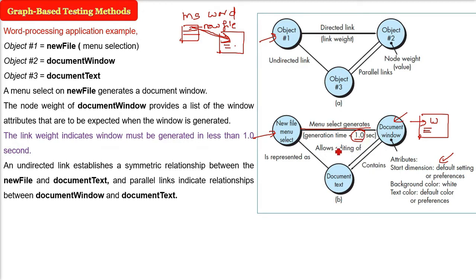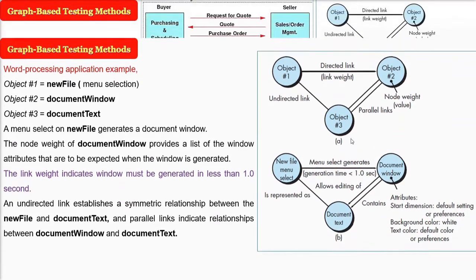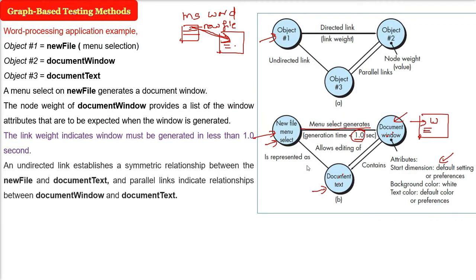And there is an undirected link between or a symmetric relationship between the new file and document text. And there are parallel links. This shows that they have relationship between document window and document text. Because document window will contain document text. So we have parallel links. So this is just a simple example for you to understand how do we make the object and what are the relationship we can give and what are the numbers or weights we provide for graph based testing method of black box testing.